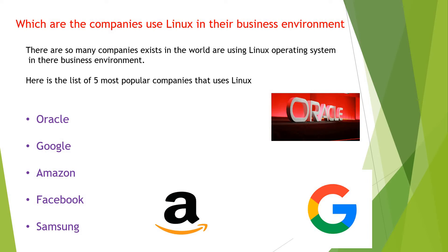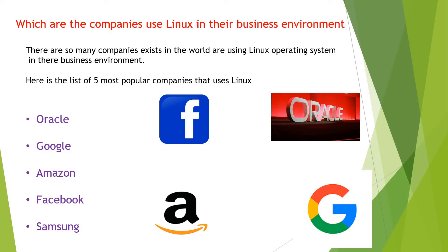The fourth name in our list is Facebook. Facebook is a social networking company and also uses Linux on their servers. The last name is Samsung. Samsung's operating system is Chrome-based, and the Chrome-based operating system is developed on Linux. So these are the 5 most popular companies that use Linux in their business environment. There are many other companies that also use Linux, but you can search for them on Google.